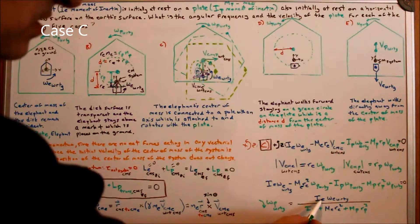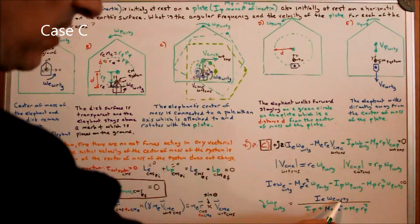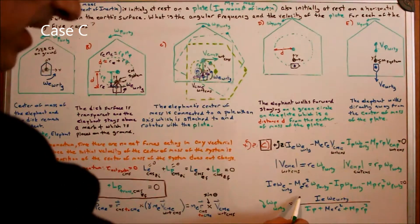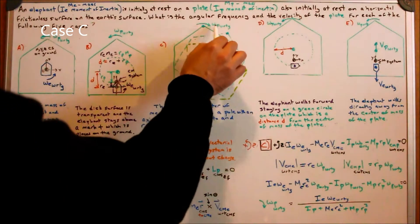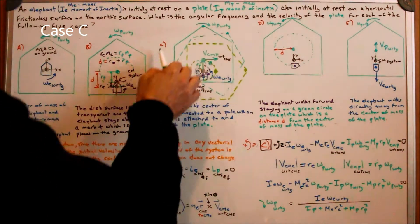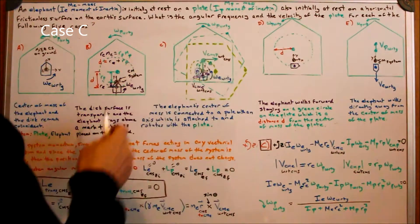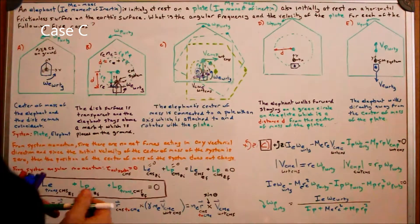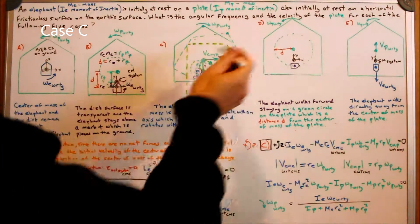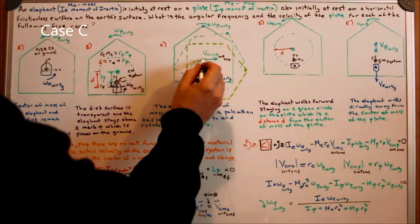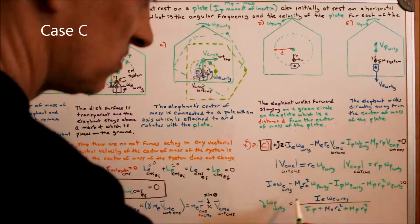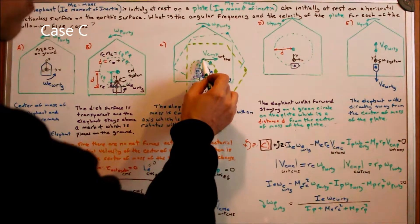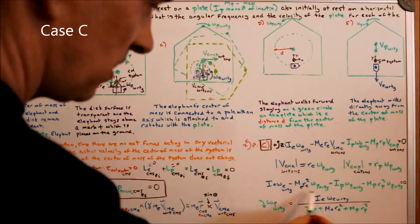The result is: the moment of inertia of the elephant times the angular frequency of the elephant with respect to ground, divided by (I sub e plus m sub e times R sub E squared plus I sub p plus m sub p times R sub P squared). This is positive in the direction defined. The velocity of the center of mass of the plate is R sub P times that angular frequency expression.